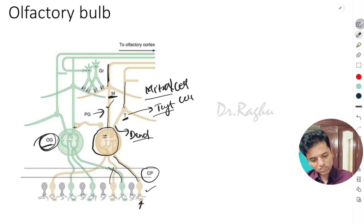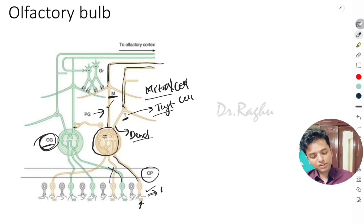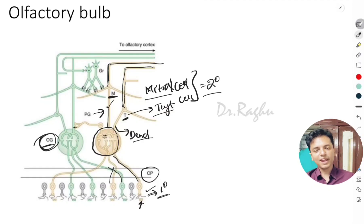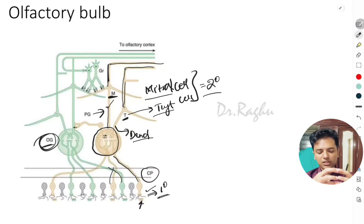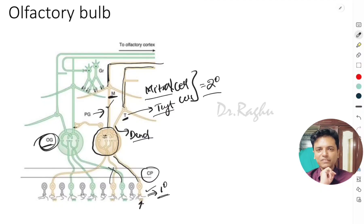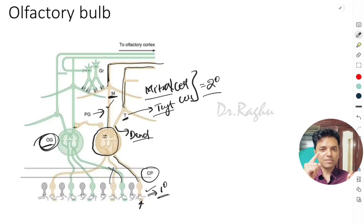The axons of the mitral and tuft cells convey information to the olfactory cortex. The olfactory receptor is the first-order neuron, and the mitral and tuft cells act as second-order neurons, conveying information to the olfactory cortex. The synapse between the axons of the olfactory receptors and the dendrites of the mitral and tuft cells is called the olfactory glomerulus or glomeruli.